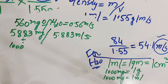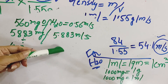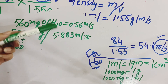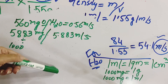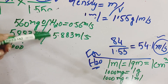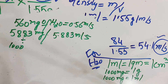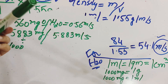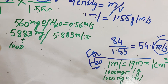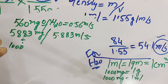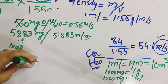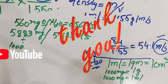I hope your concept is now clear. This is a basic conversion that every student should know from undergraduate to PhD level. The first step is always to know the density of the solvent or liquid you are using, because density plays a very important role in this type of conversion. In the next video, I will explain how to convert milliliters to grams. Thank you very much.